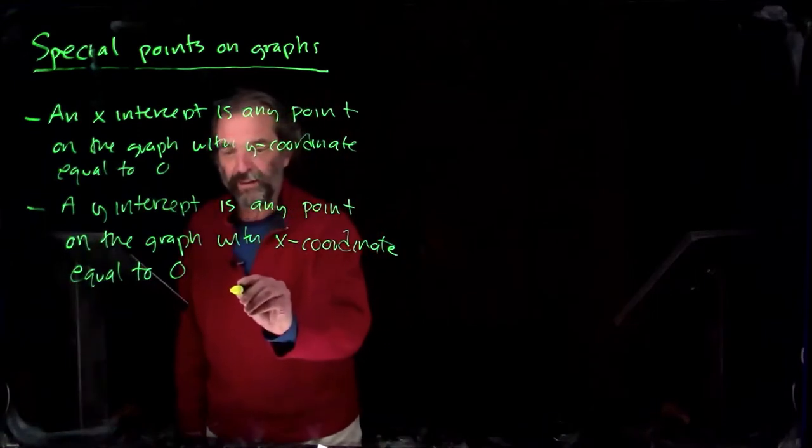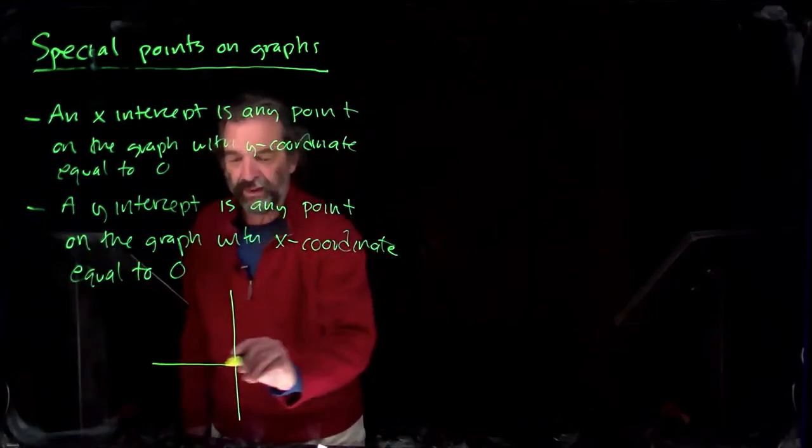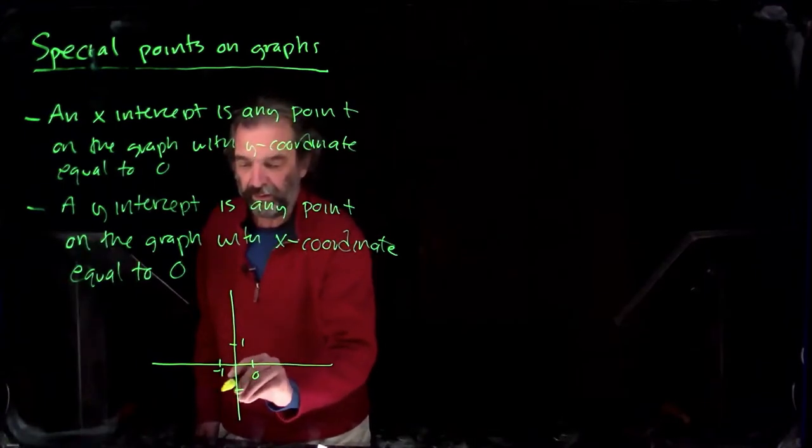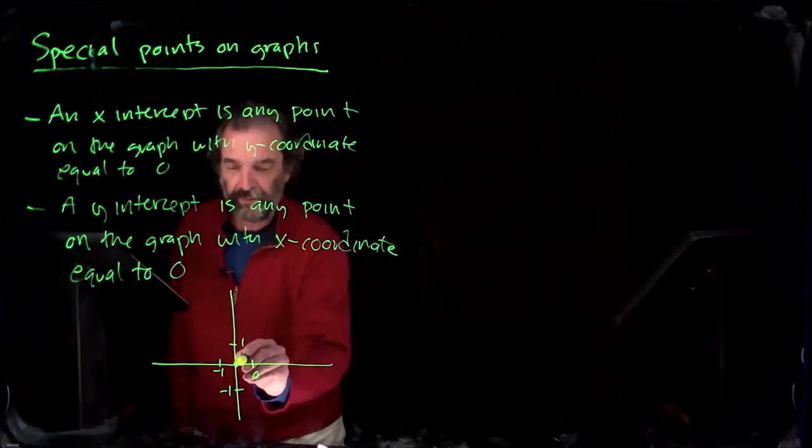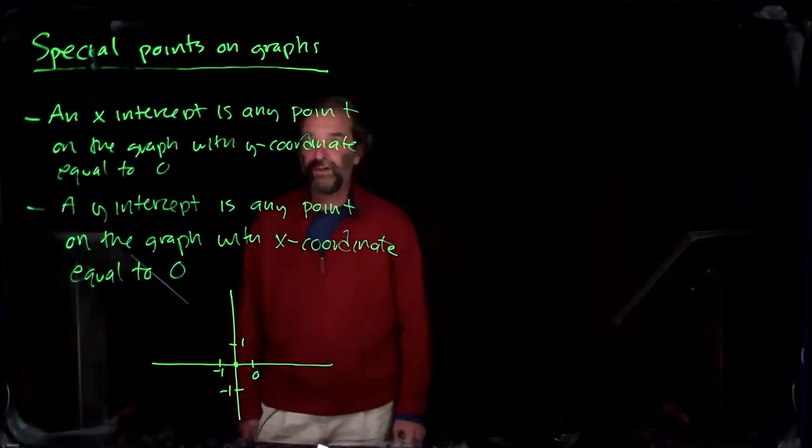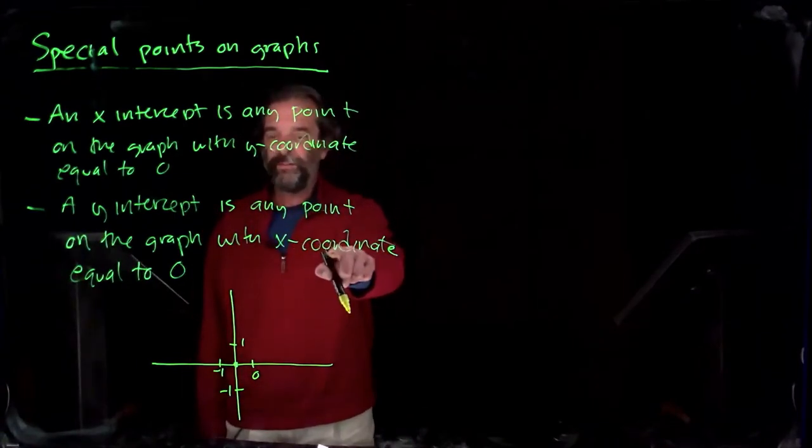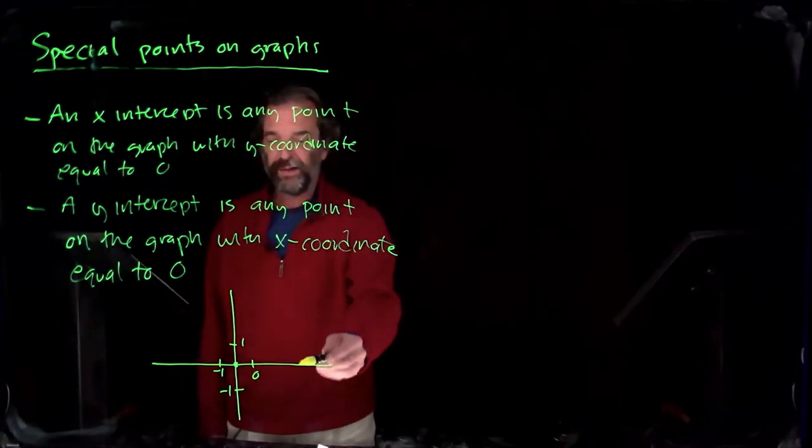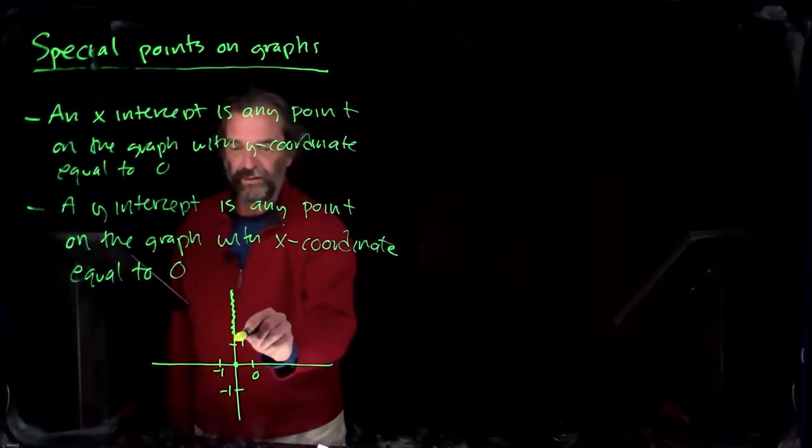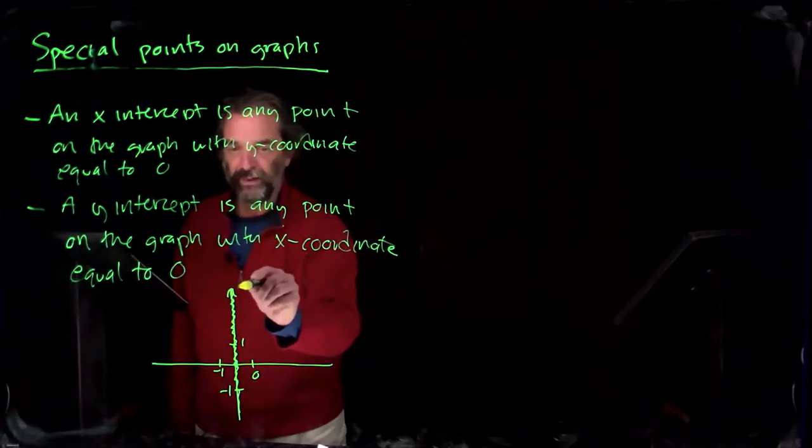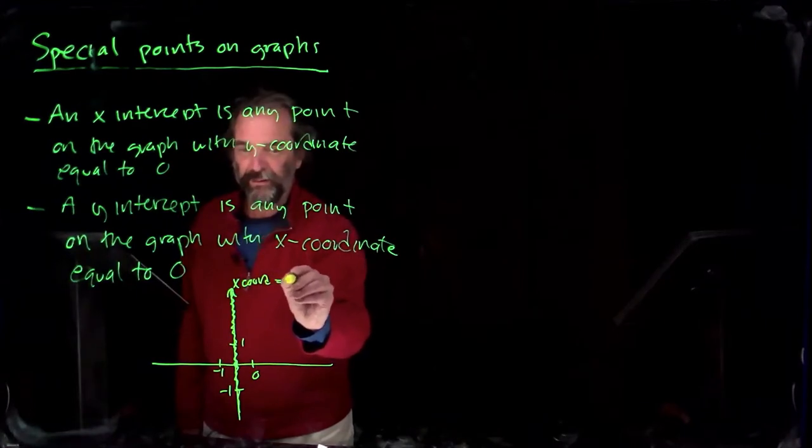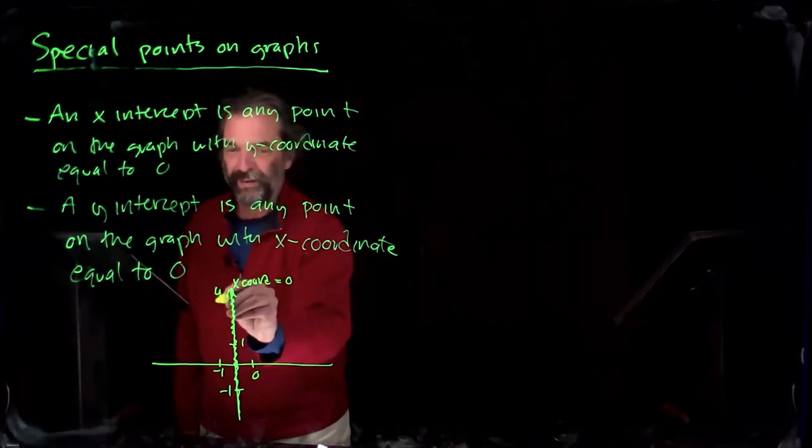As long as you're drawing the coordinate system with the axes crossing as we did at zero, then the points that have x-coordinate equal to zero, x-coordinate is this way, x-coordinate equal to zero, that's exactly the whole y-axis. So that is x-coordinate equal to zero. I'm going to label it the y-axis.